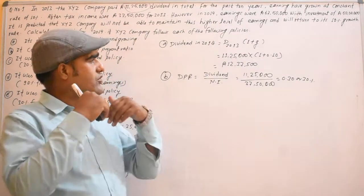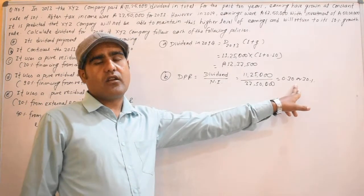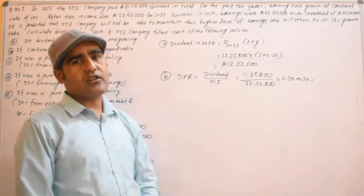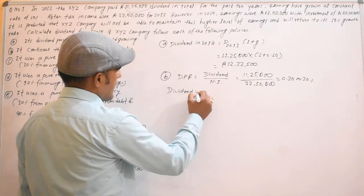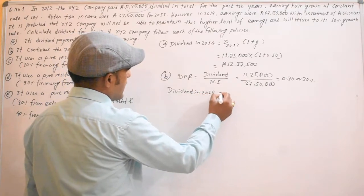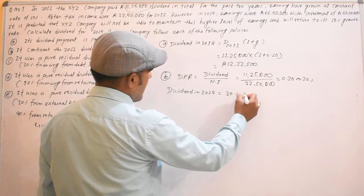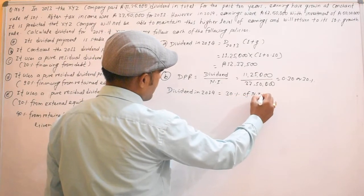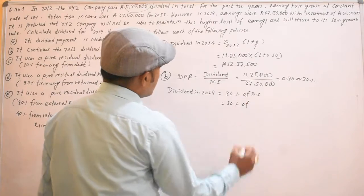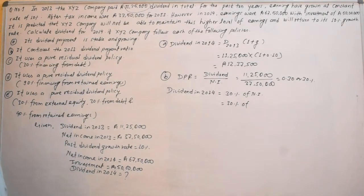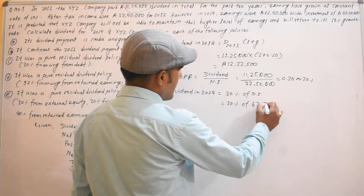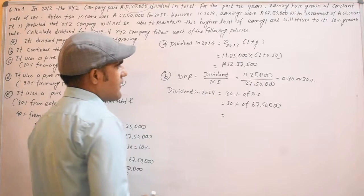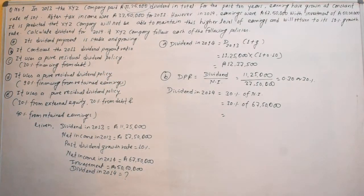The dividend payout is 30% of net income. If you think about it in 2014, the dividend is 30% of net income. Our dividend in 2014 is 30% of net income. It is 67 lakhs, so 30% of net income is approximately Rs. 20,25,000.